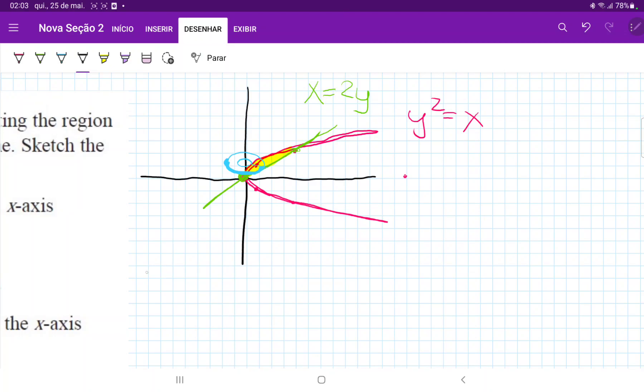And now we're going to set these equal to each other just so that we find the bounds of integration. So we have that y squared is equal to 2y. I'm going to bring the 2y to the left, so y squared minus 2y is equal to 0. Factor it. Therefore, y is equal to 0 or y is equal to 2.